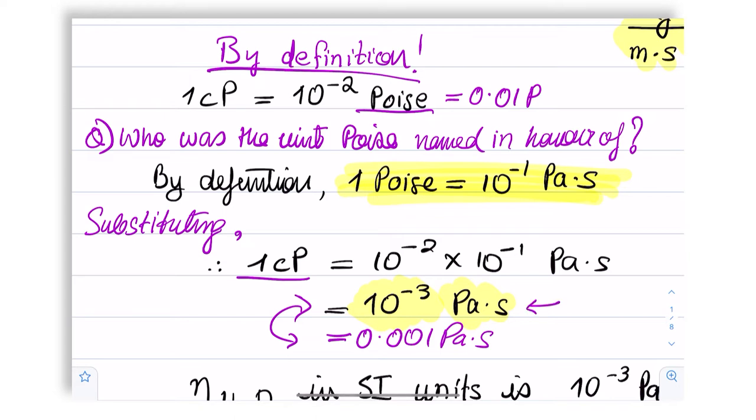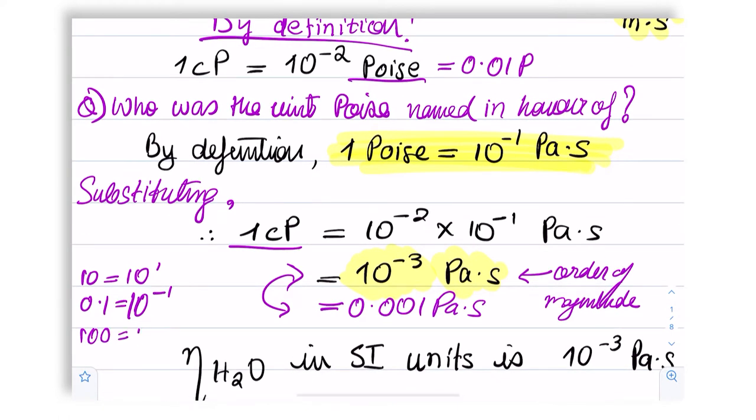These two are obviously identical. You know that this refers to the order of magnitude and it is derived from the idea that I can write 10 as 10 to the power one, 0.1 as 10 to the power minus one, 0.01 as 10 to the power minus two, and so on.